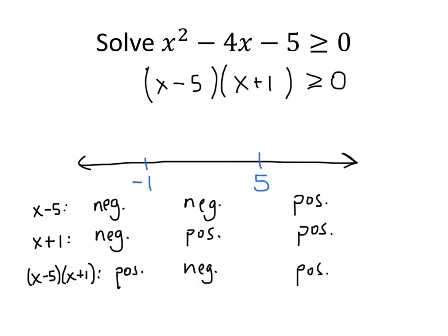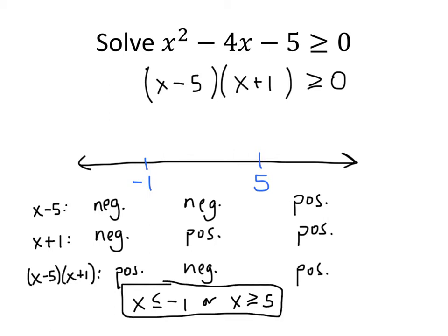So if I want to know when this quadratic expression is greater than or equal to 0, I've figured it out. It's greater than or equal to 0 in the leftmost section and the rightmost section. So my solution is x less than or equal to negative 1 — less than or equal to because if x equals negative 1, the product equals 0 — or x greater than or equal to 5.